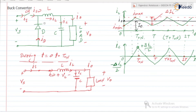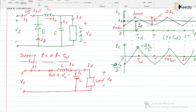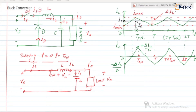The function of the inductor is to oppose the change in current, which causes the current flowing through the load to be constant. The function of the capacitor is to oppose the change in voltage, so the capacitor is connected across the load to maintain constant voltage. When T is between 0 and T_ON, the inductor is storing energy.